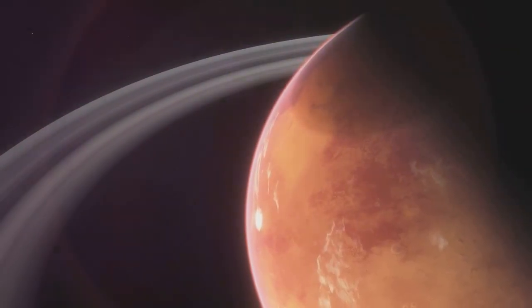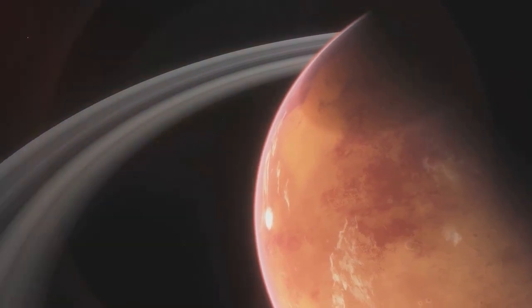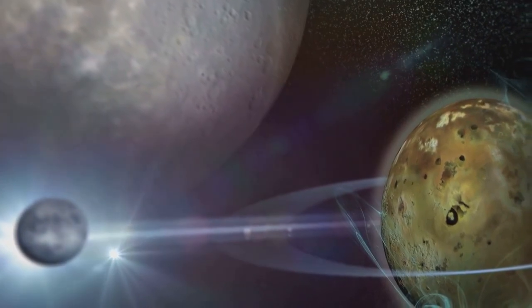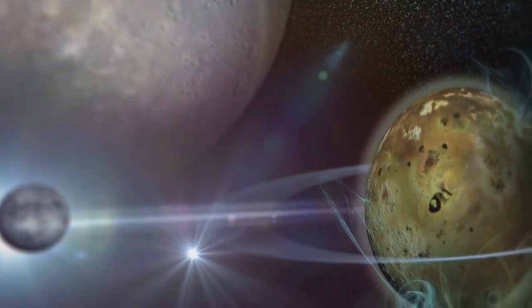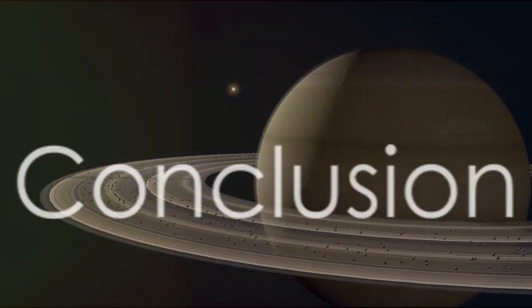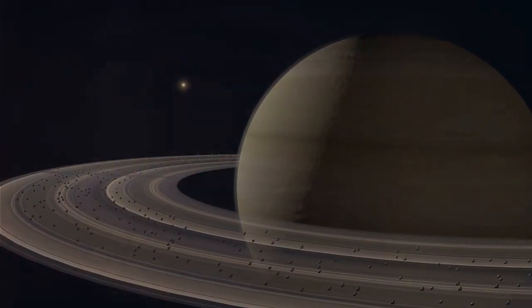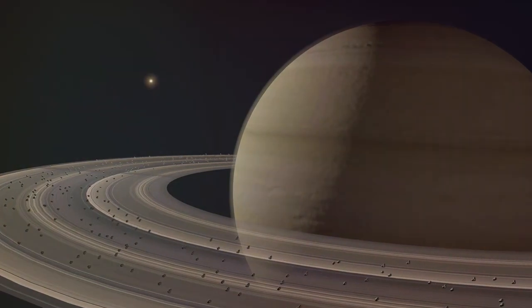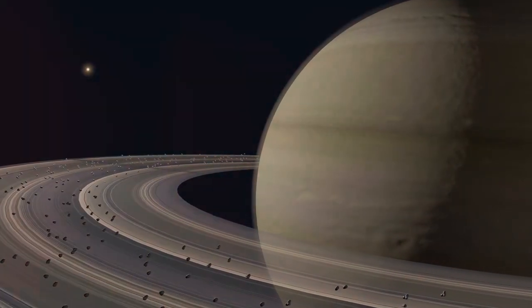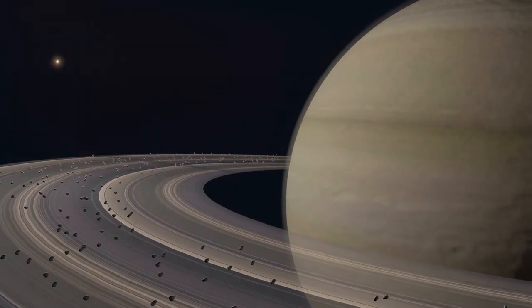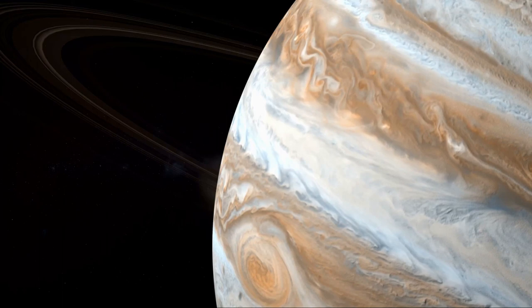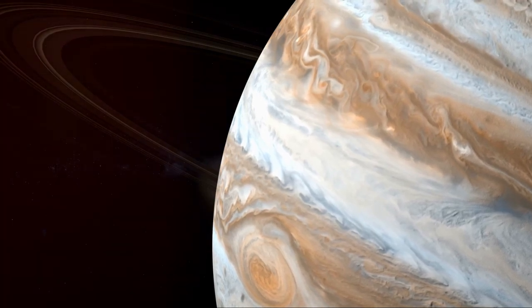These unique features add a layer of complexity to our understanding of planetary rings. They remind us that these magnificent celestial features are not just static decorations, but dynamic systems full of activity and intrigue. Our journey through the planetary rings has been a fascinating one. We've traveled from the icy rings of Saturn to the faint rings of Jupiter, and even explored the unique features of Uranus and Neptune. We've delved into the intricate dynamics that underpin these celestial phenomena, from gravitational interactions to orbital resonances.